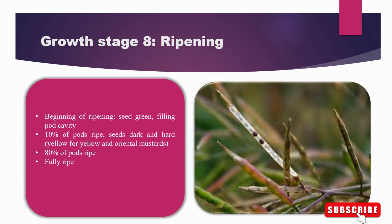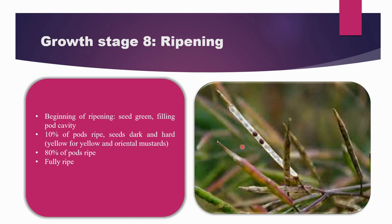Coming to the ripening stage. In the ripening stage you can see the ripening of the seeds, with green filling of the pod cavity. About 10% of the pods have ripe seeds that are dark and hard. As seen in the picture, dark colored seeds appear in the yellow-oriented mustard pods, and 80% of the pods are ripened in this stage.